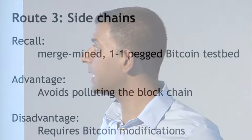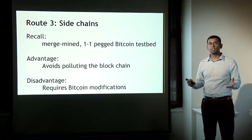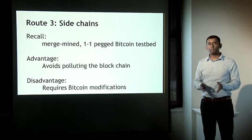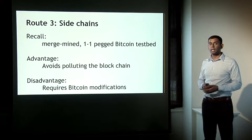Now let's move to the third route: sidechains. A sidechain is a merge-mined alternative chain that still utilizes some or all of the mining power behind Bitcoin. The value of the currency represented by the sidechain is pegged one-to-one, because a proof of burn in either chain allows you to redeem coins in the other chain. The typical proposed use is as a Bitcoin testbed — people want to try out modifications to Bitcoin without messing with the Bitcoin system itself, but still have currency interoperability.